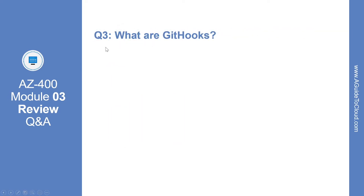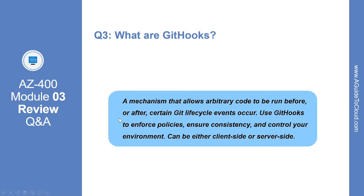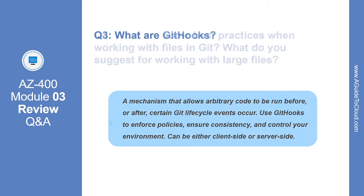Question number three. What are git hooks? A git hook is a mechanism that allows arbitrary code to be run before or after certain git lifecycle events occur. Use git hooks to enforce policies, ensure consistency, and control your environment. They can be either client-side or server-side.